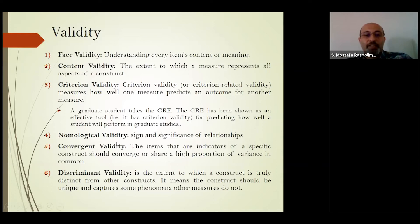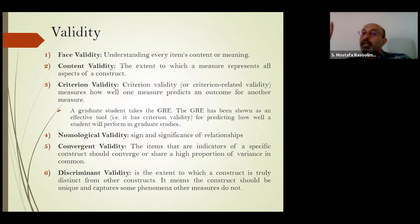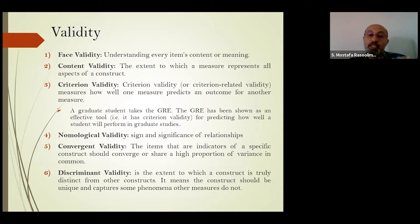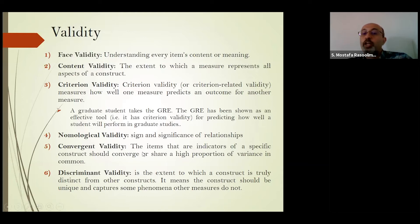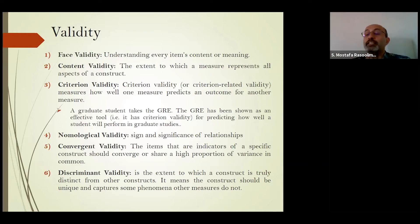We have other types of validity like criterion validity and nomological validity, which we test within our framework. The relationship between a variable and some criterion or dependent variable should be significant based on previous studies. For example, if a previous study shows a significant relationship between satisfaction and loyalty, we check that relationship to verify whether our items measuring satisfaction are suitable. Another type is convergent validity — items measuring each construct should be highly correlated and convergent with each other.